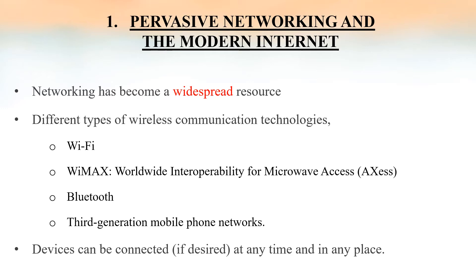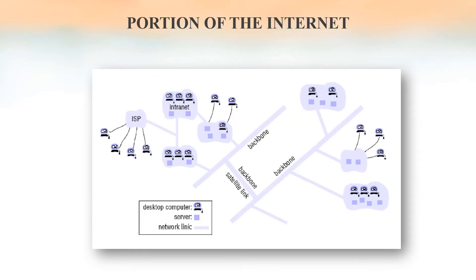Devices can be connected at any time and in any place. Here we can see the illustration of a portion of the internet, and we can see the internet as a good example of distributed computing. In this figure, we can see an intranet and another intranet. So we can see the internet as a collection of intranets, which are nothing but sub-networks operated by companies or other organizations.